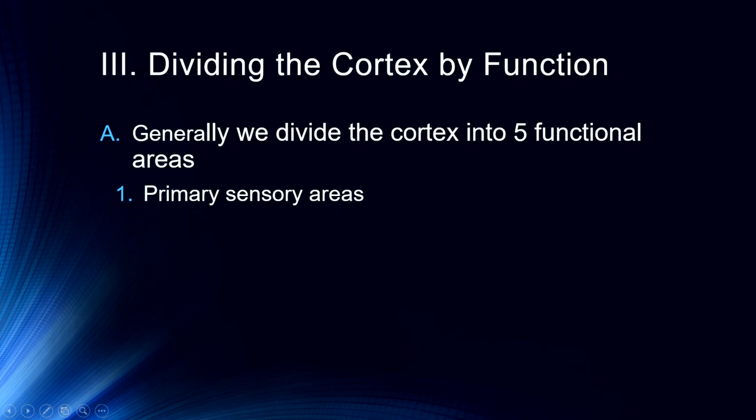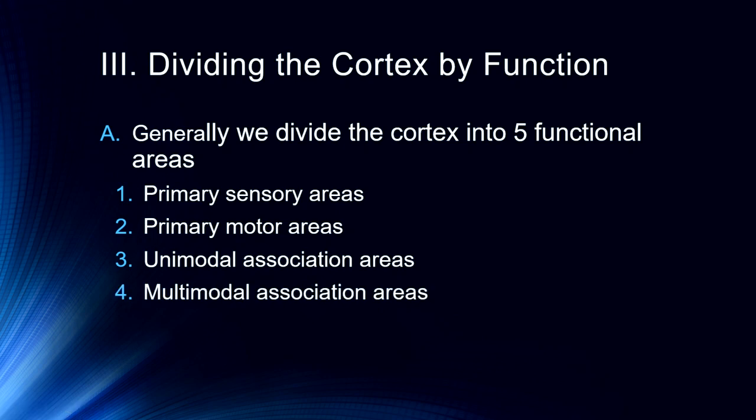We think about five general functional areas. There's primary sensory areas: the primary visual areas, the olfactory bulb, the auditory cortex which is the Heschel's gyrus, the primary somatosensory area. There are the primary and secondary motor areas. There are unimodal association areas. For example, we'll talk about some areas involved in just vision and associating those with visual objects. There are multimodal association areas where your auditory and visual systems work together in a variety of areas.